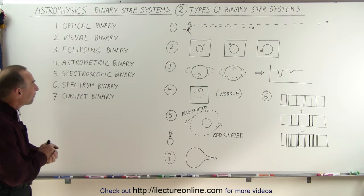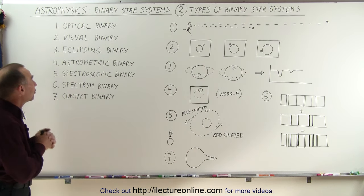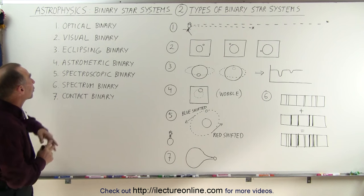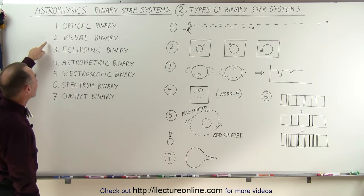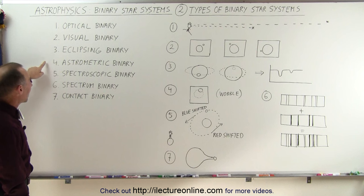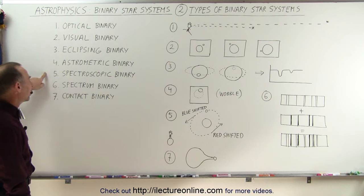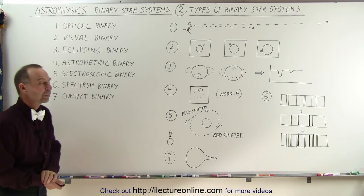The seven different kinds of binary star systems that you can encounter are called optical binaries, visual binaries, eclipsing binaries, astrometric binaries, spectroscopic binaries, spectrum binaries, and contact binaries.